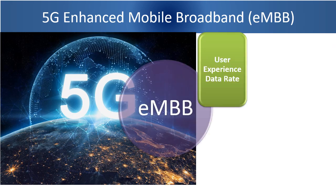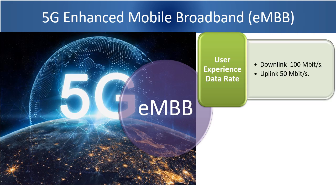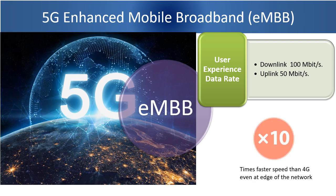User experience data rate. You might have experienced that when you are near to a mobile tower, you get a good data rate. And when you are away from the mobile tower, your data rate is low. ITU has envisioned that even if you are on the edge of a network, far away from the tower, you should at least get 100 megabit per second in downlink and 50 megabit per second in uplink. This is a kind of guaranteed data rate one should expect even at the edge of the 5G network, and this is 10 times faster compared to 4G. However, operators need to deploy a sufficient number of towers, spectrum, backhaul, etc. to meet such user experience data rate.